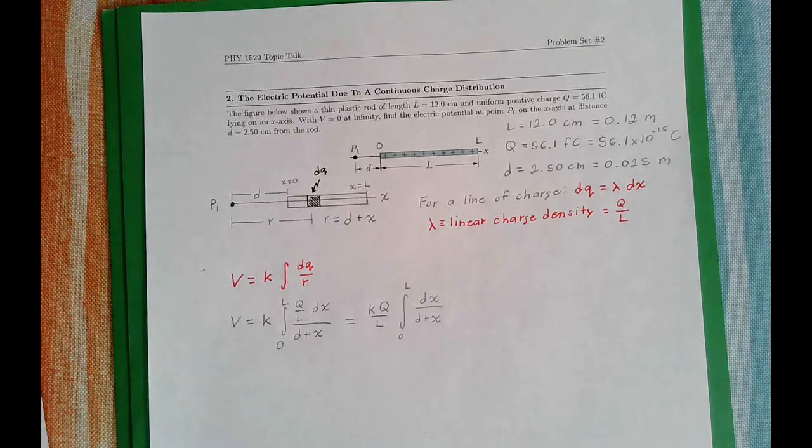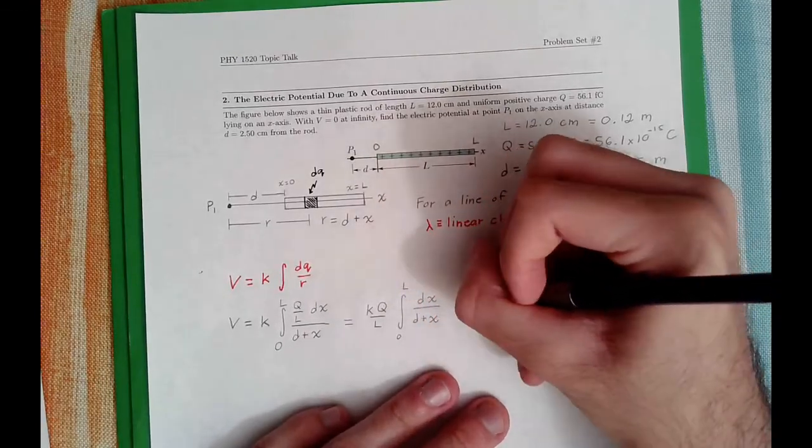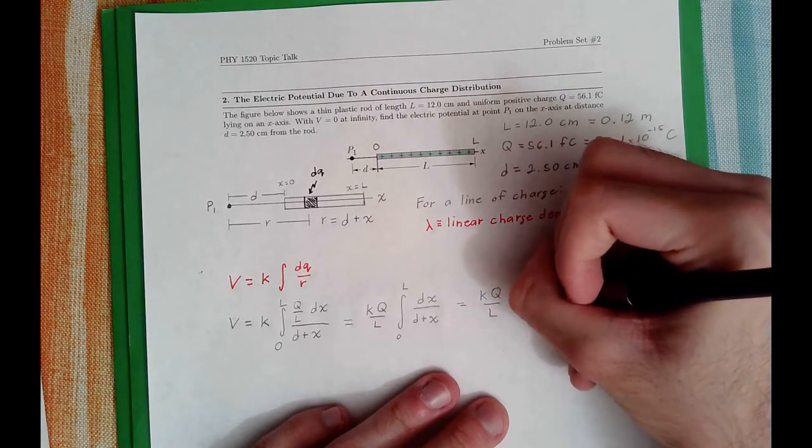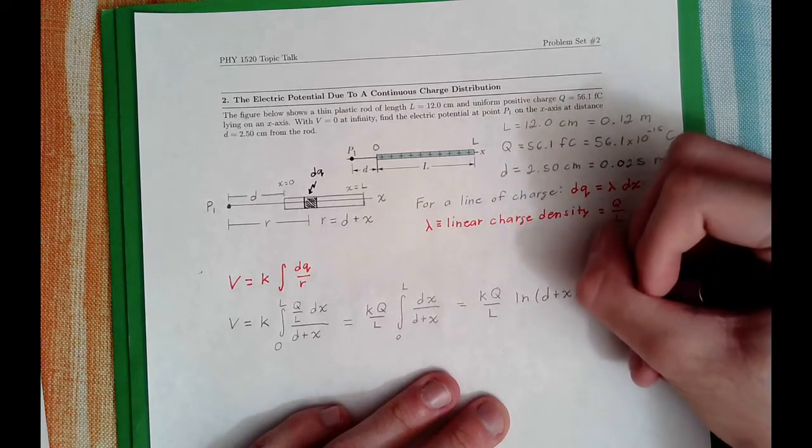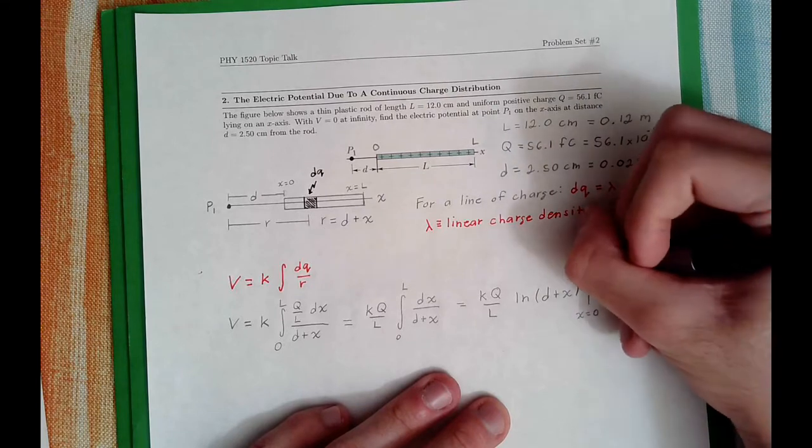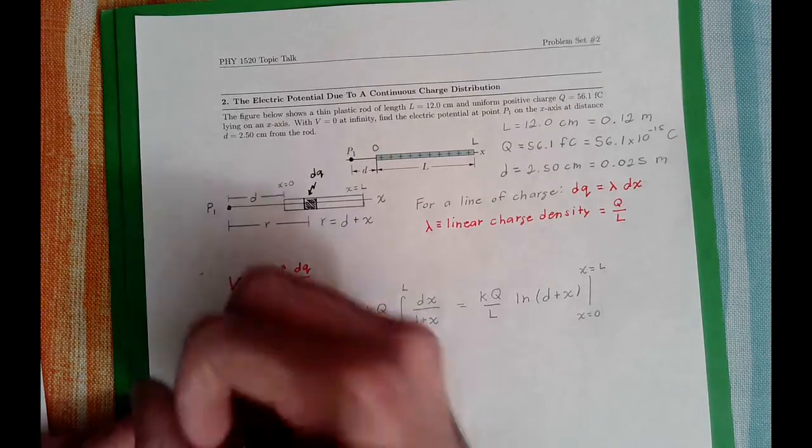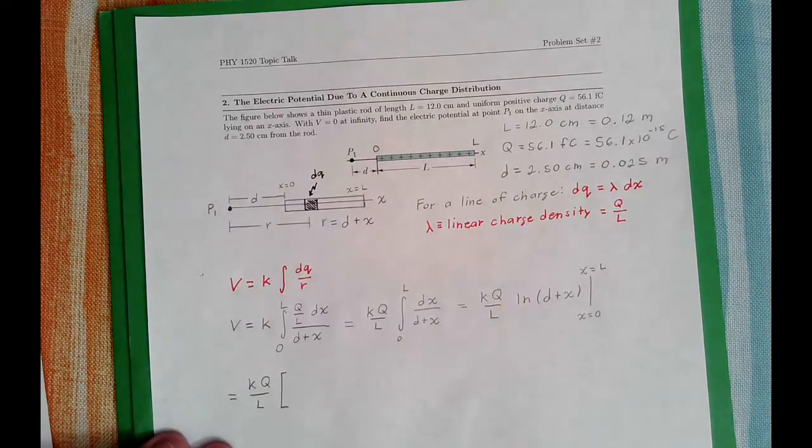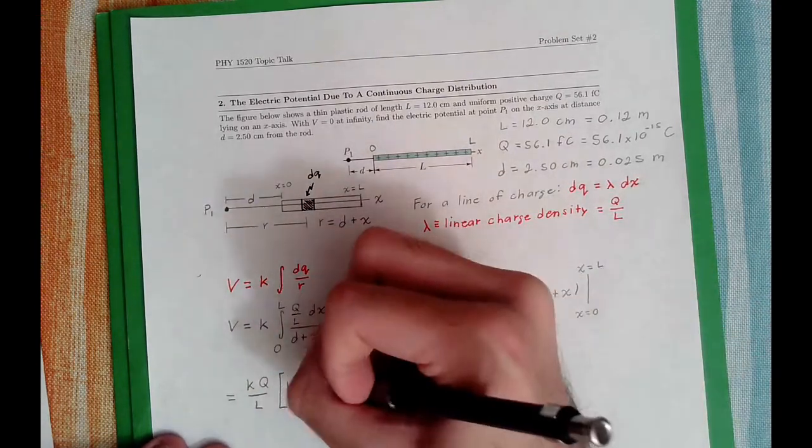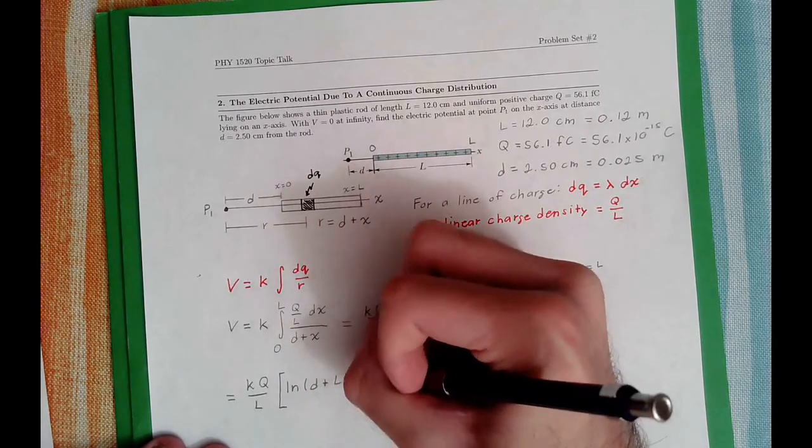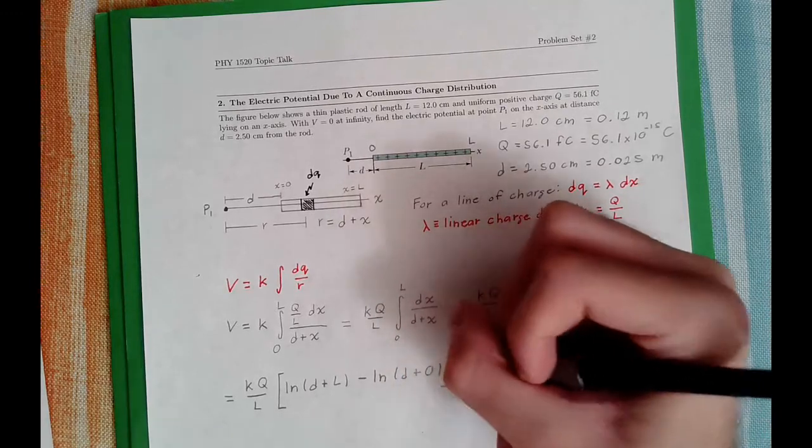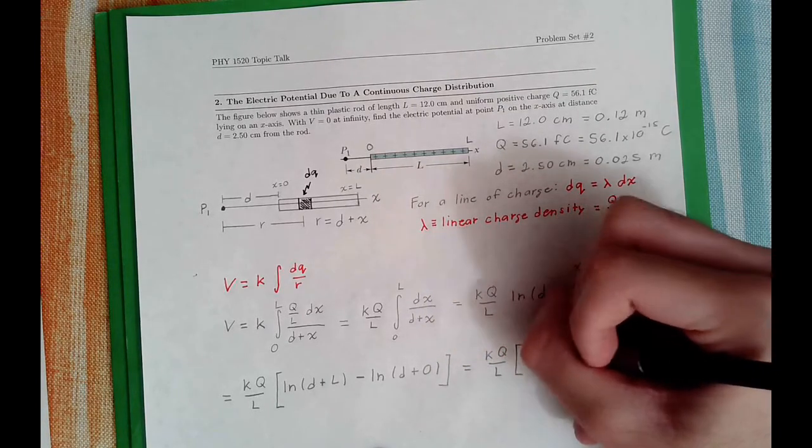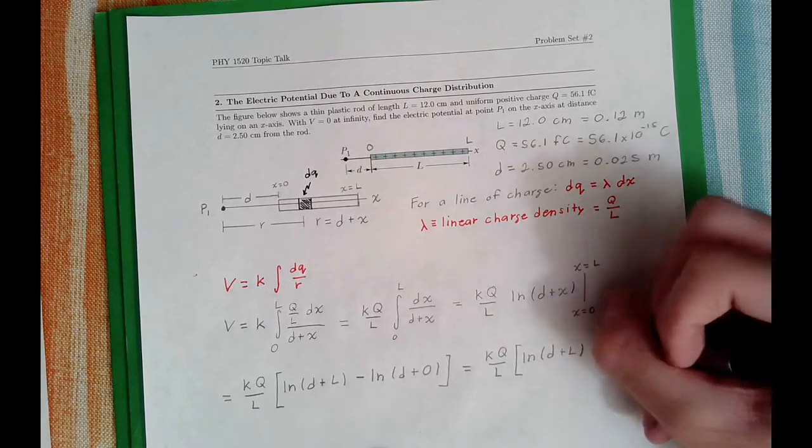This is a relatively simple integration. This ends up being KQ over L. This integration is the natural log of D plus X evaluated from X equals 0 to X equals L. So let's go ahead and do that. We have KQ over L times the natural log of D plus L minus the natural log of D plus 0. So this just becomes KQ over L, the natural log of D plus L minus the natural log of D.